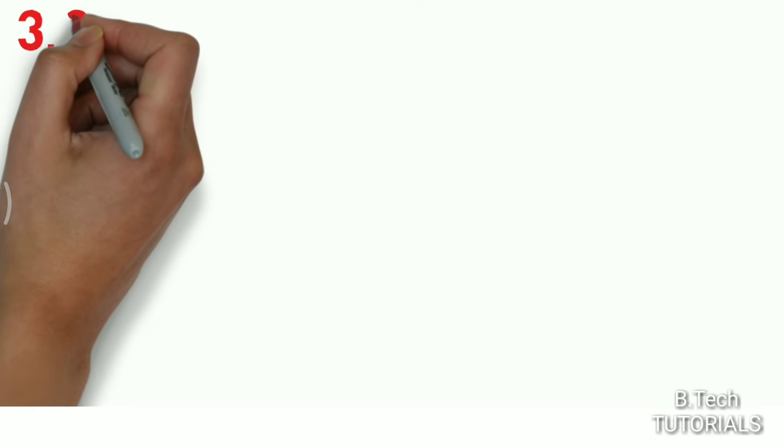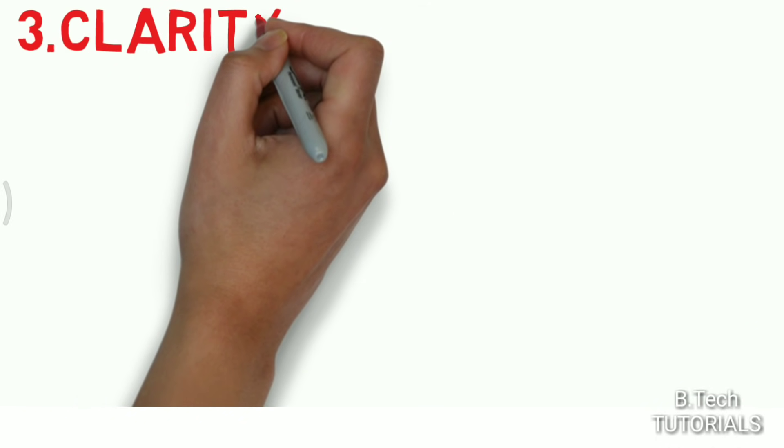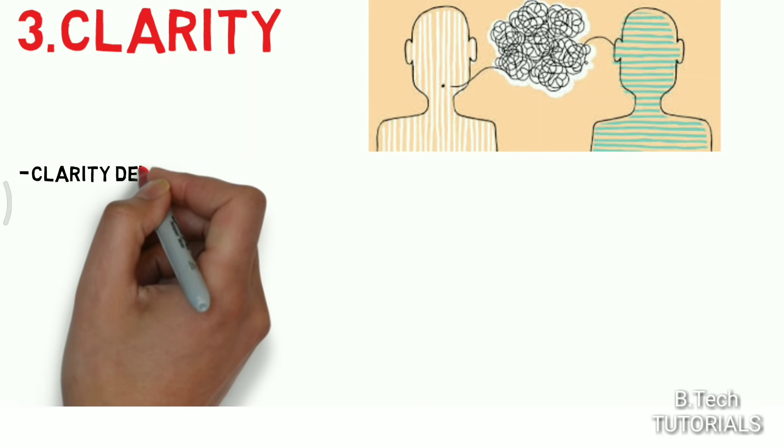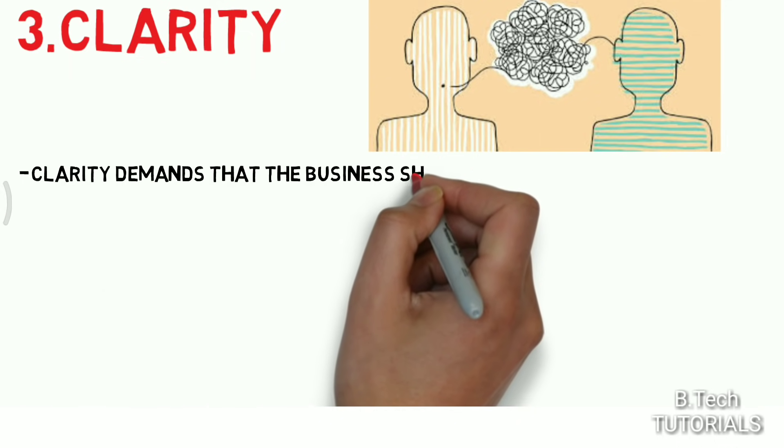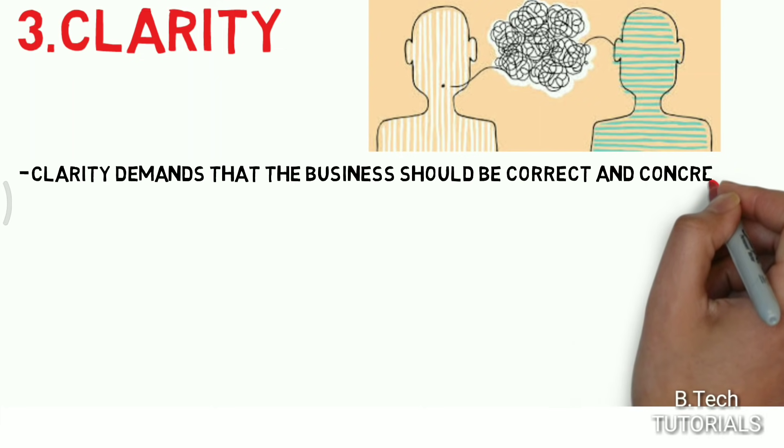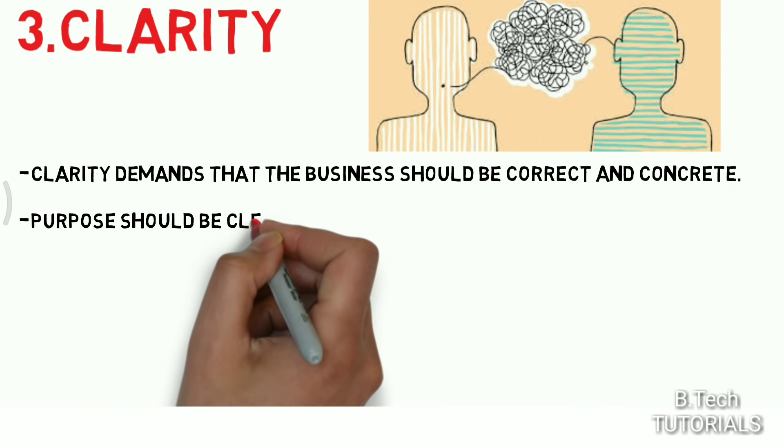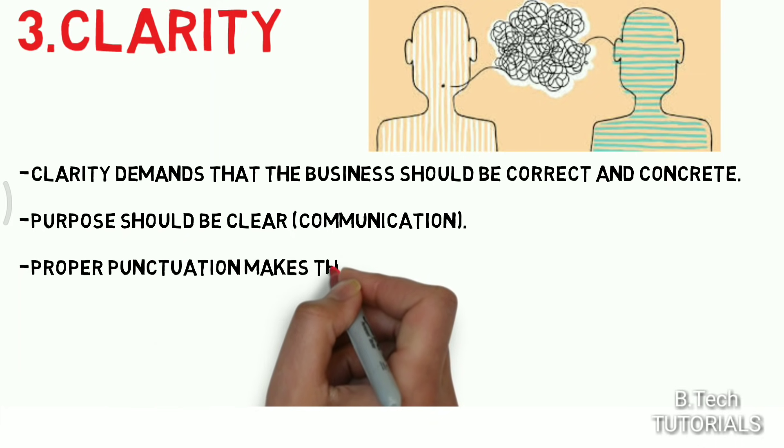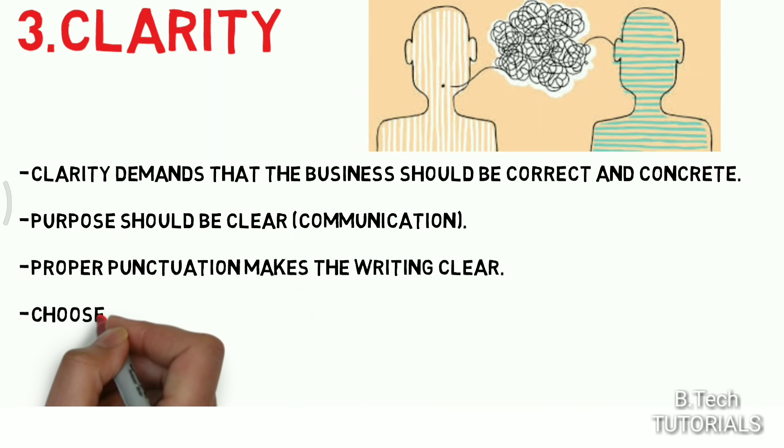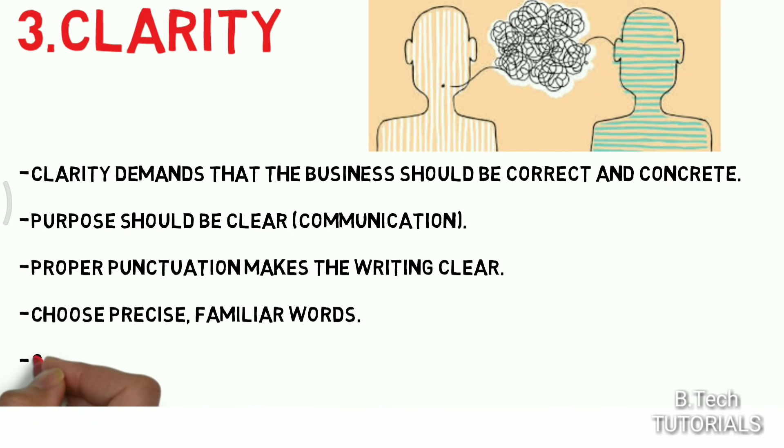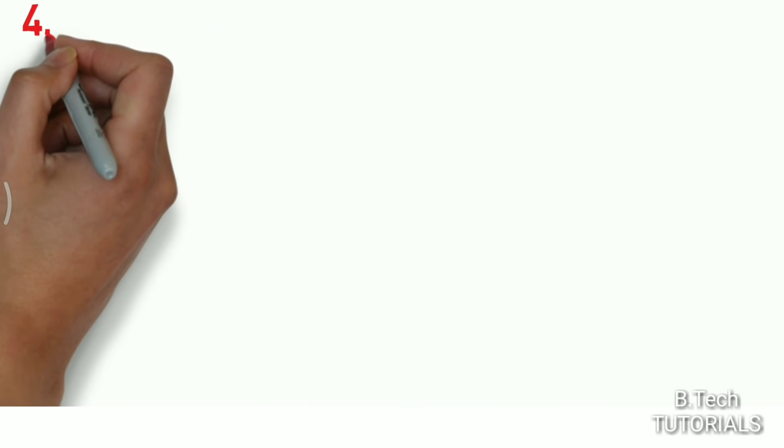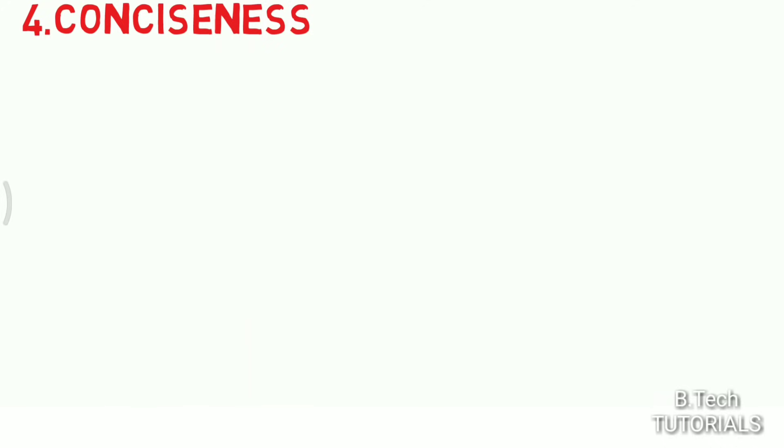The third C is clarity. It means our communication purpose should be clear. Clarity demands that the message should be correct and concrete. The purpose should be clear in our communication. Proper punctuation makes the writing clear. Choose precise and familiar words and construct effective sentences and paragraphs.